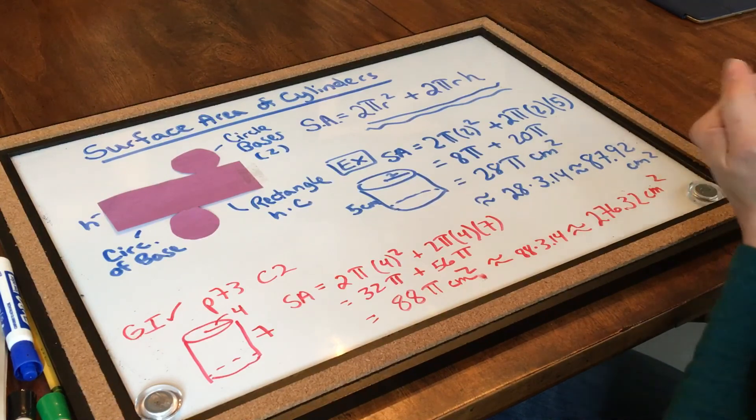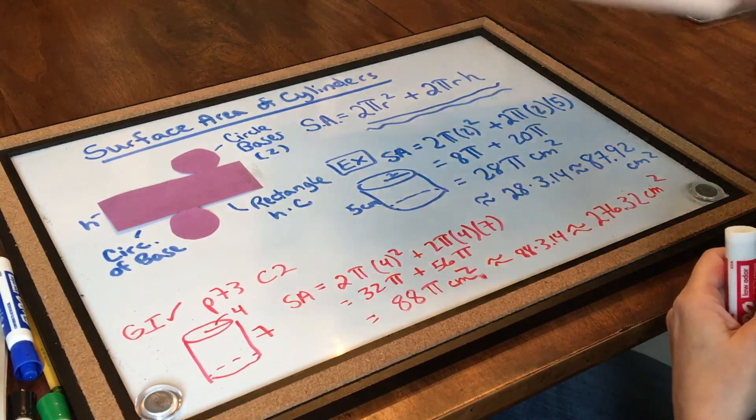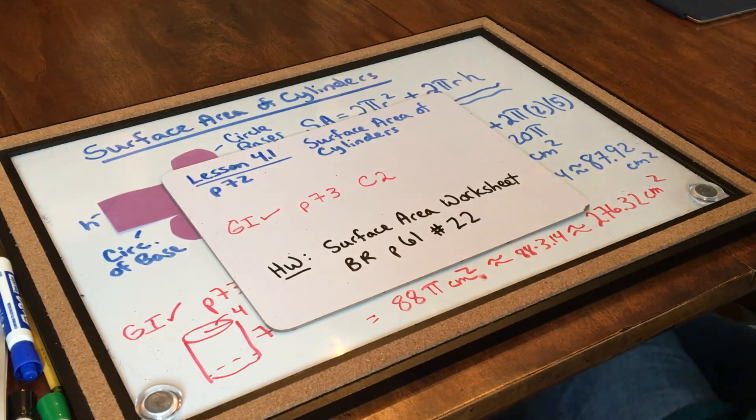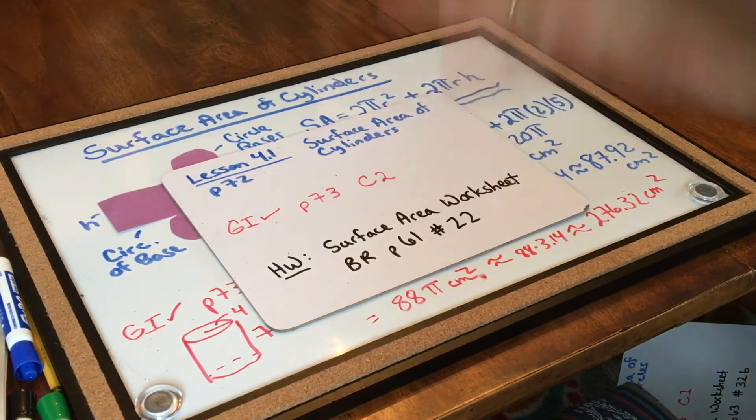Okay, it is time to try your homework. So make sure you're working on your surface area worksheet and bell ringer, page 61, number 22. Bye, see you tomorrow.